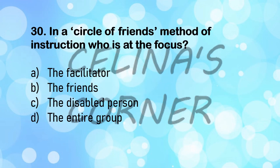Question 30: in a circle of friends method of instruction, who is at the focus? A circle of friends is an inclusive technique like a buddy system. Is it the facilitator, the friends, the disabled person, or the entire group? The focus is the disabled person. This entire circle of friends is made for this person so that he feels included. About seven or eight people are his friends and they make sure he feels included in all activities and studies, and they help him out.